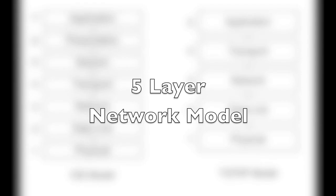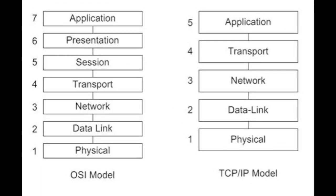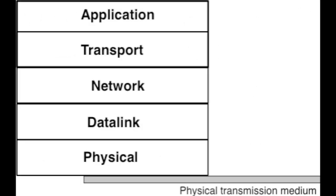The five-layer network model is very similar to the OSI model and essentially collapses the top three OSI layers into one layer. So it takes the application, presentation, and session layers of the OSI model and collapses them into one application layer on the network model. Whereas the OSI model is a formal standard, the internet model evolved from the work of thousands of people who develop pieces of the internet. This five-layer network model will be the model discussed throughout the remainder of this presentation.